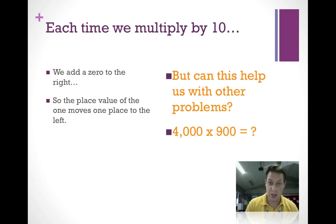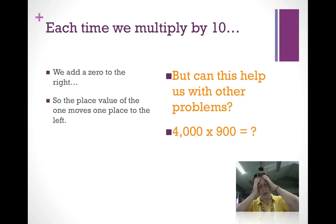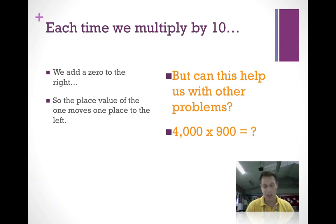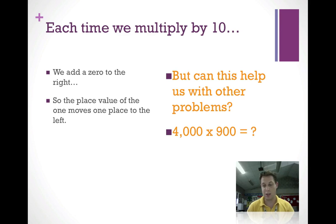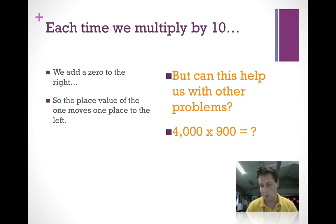4,000 times 900 — you might think those are huge numbers, how am I ever going to multiply this? But with just three easy steps and what you now know about multiplying by 10, you will be able to do this in your head with a little bit of practice, without memorizing anything.